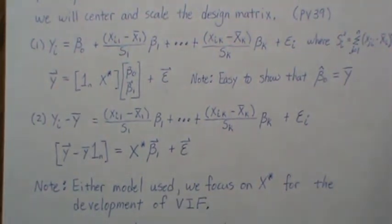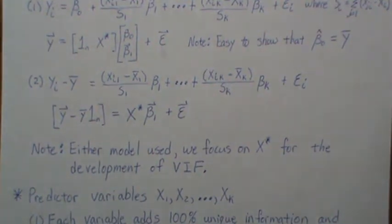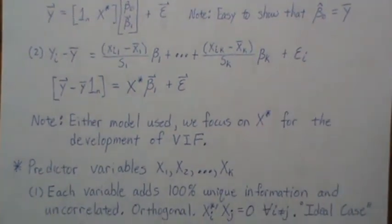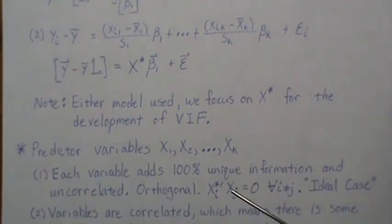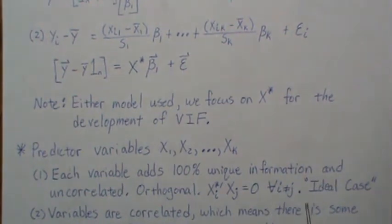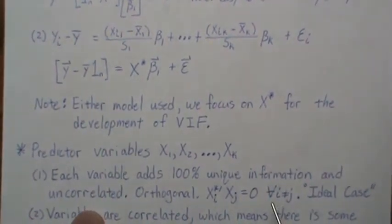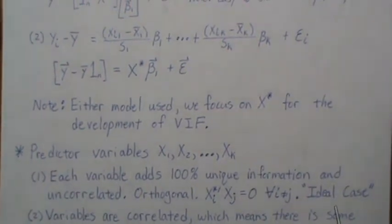We don't really concern ourselves with beta_0. We're going to spend about a page and a half developing this, trying to get intuition, and then introduce the definition you see in books on page three, because it's not really intuitive what it means. So stick with me and it'll all make sense in the end. We have k predictor variables x_1 through x_k, and I think of three different cases. The first is the ideal case: each variable adds 100% unique information and they're uncorrelated — mathematically orthogonal, meaning the dot product of any two vectors is zero. That's the perfect setting.